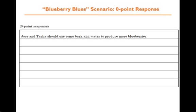A zero-point response is very basic and vague — it plainly talks about adding bark and water and then, presto, you've got blueberries. It doesn't address the details of what to do with the bark or how to add it to the garden, and has no explanation of what those two ingredients would do to improve the mass or number of blueberries.